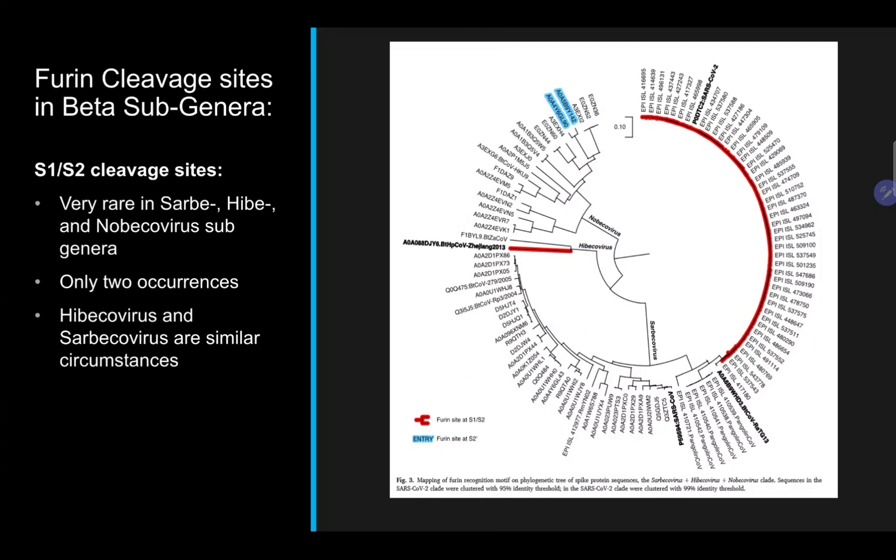In Hebe, the sister group of Sarbe, there does exist a Hyposidurus bat coronavirus with an S1/S2 cleavage site. Importantly, this virus is somewhat analogous to CoV-2 because it also exists in a subgroup as the only virus with this particular furin cleavage site.